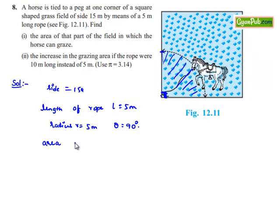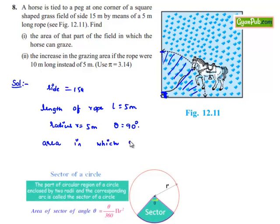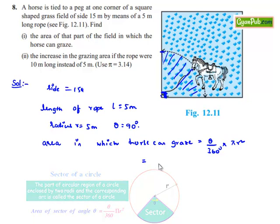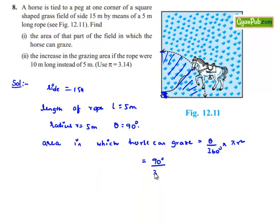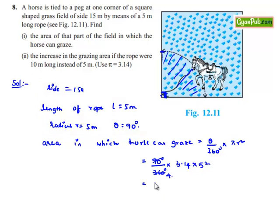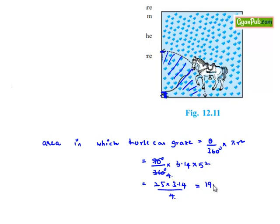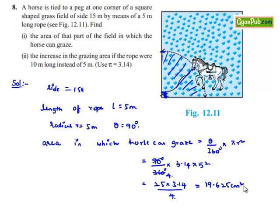Therefore, the area in which the horse can graze is the area of the sector subtending 90 degrees at the center, given by (theta / 360) × π × r². That is (90 / 360) × 3.14 × 5², which equals (1/4) × 3.14 × 25 = 19.625 m².